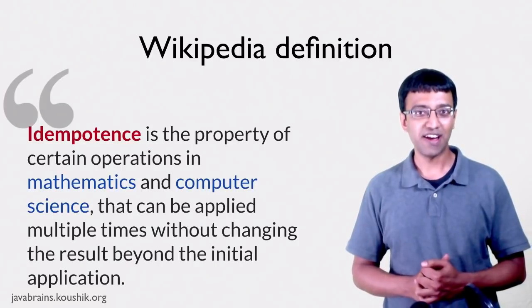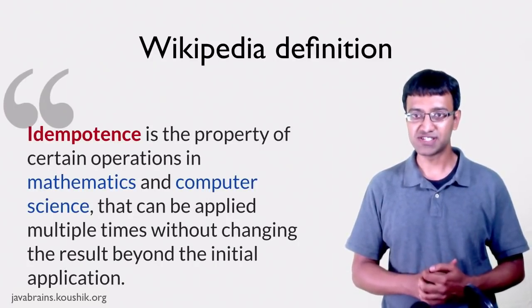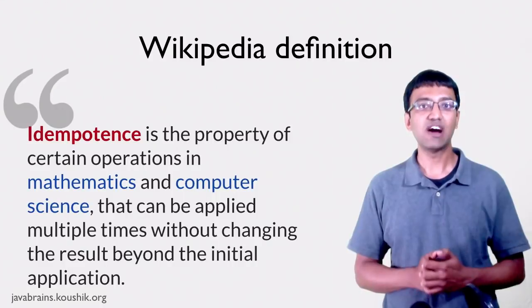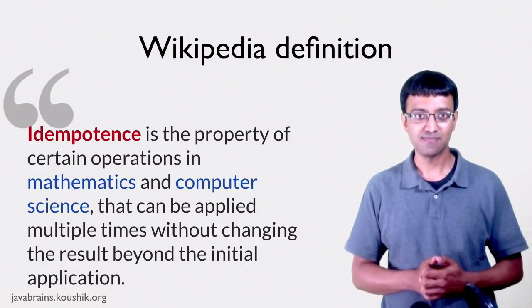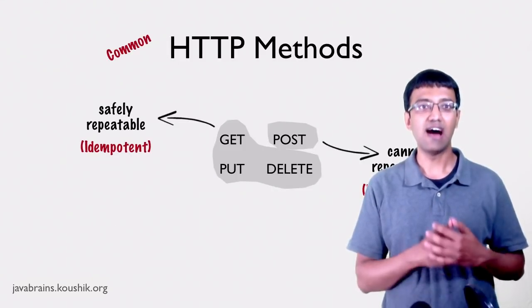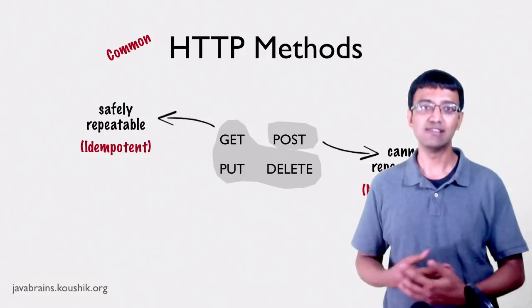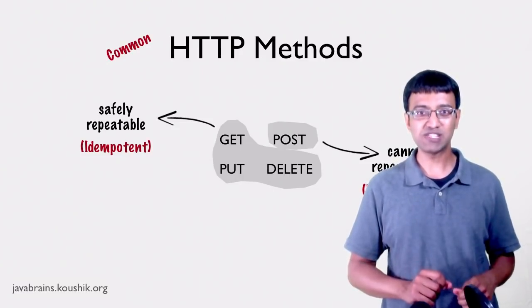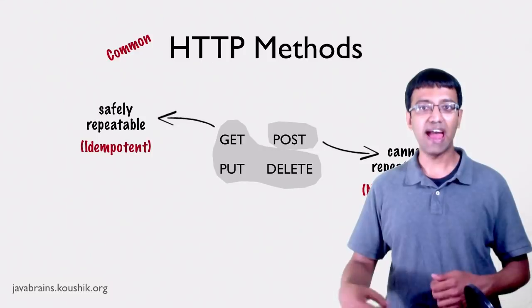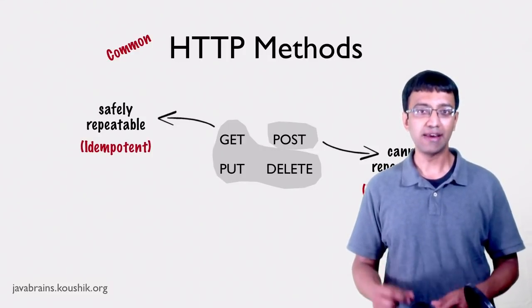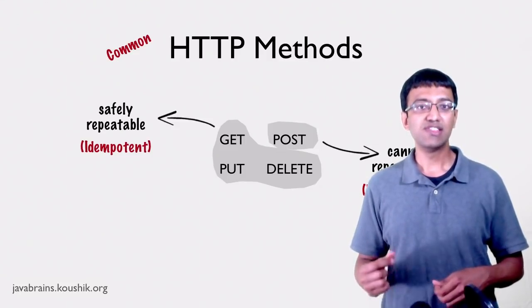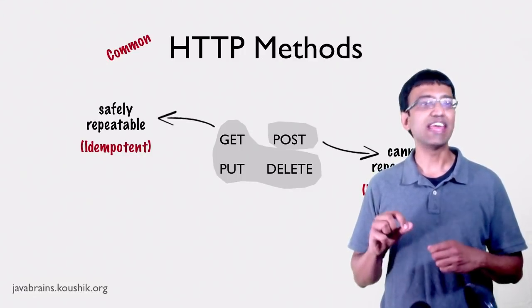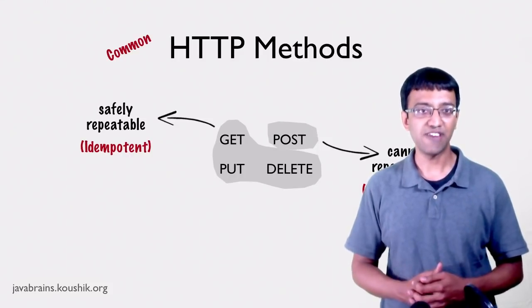The methods in the first category are called idempotent methods. GET, PUT, and DELETE are idempotent. POST is non-idempotent because every time you repeat the request, you change something. Here's the Wikipedia definition: idempotence is the property of certain operations in mathematics or computer science that can be applied multiple times without changing the result beyond the initial application. The HTTP specification requires GET, PUT, and DELETE to always be idempotent.